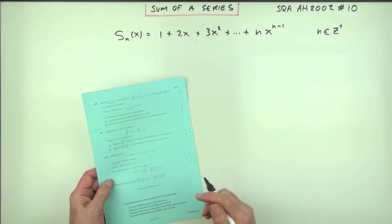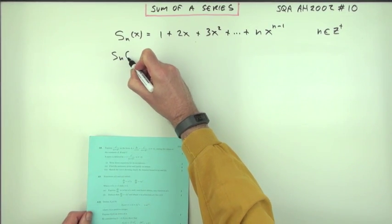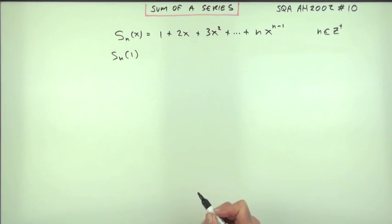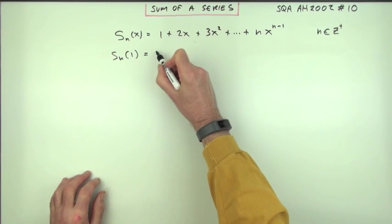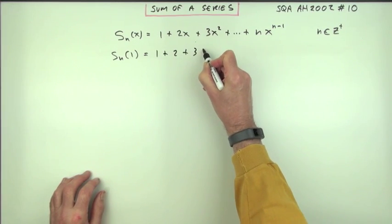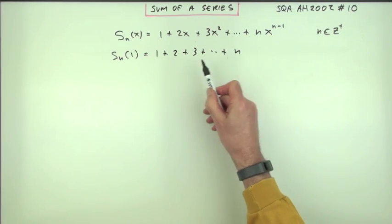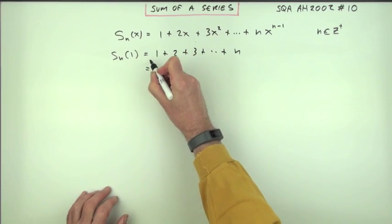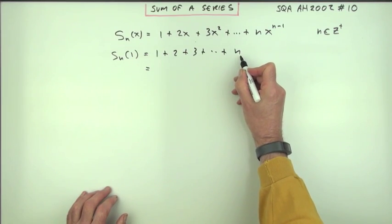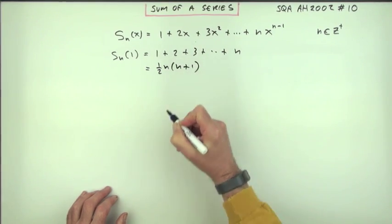If you look at that question, it actually starts off by saying this. Express the sum to n terms when x is 1. Well, when x is 1, that will reduce to 1 plus 2 plus 3, all the way up to n, which is just the first n terms of a simple arithmetic series. And that's when you should recognize the sum of the first n natural numbers is a half of n times n plus 1.